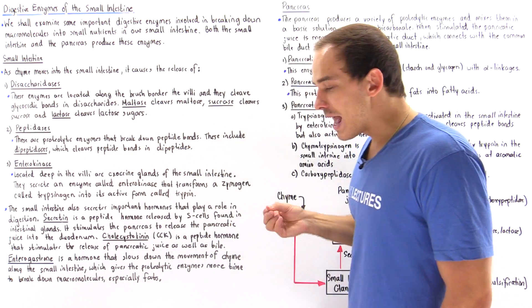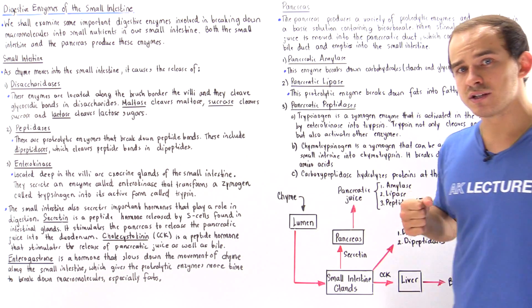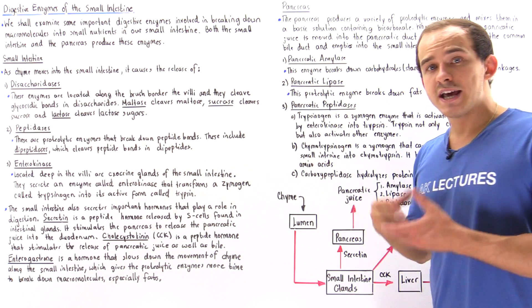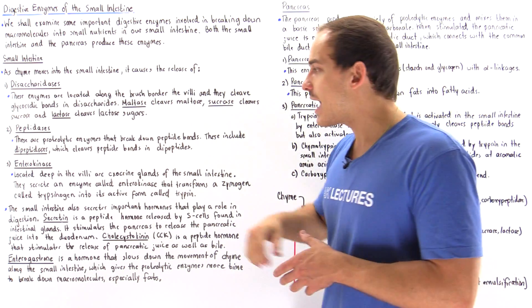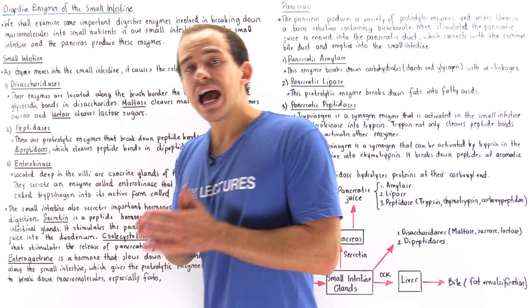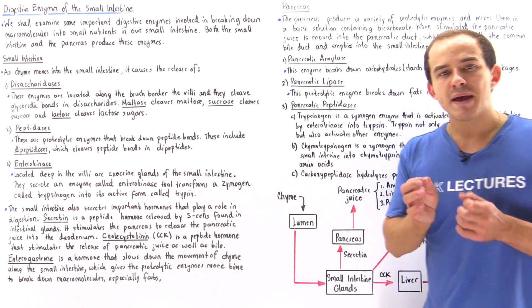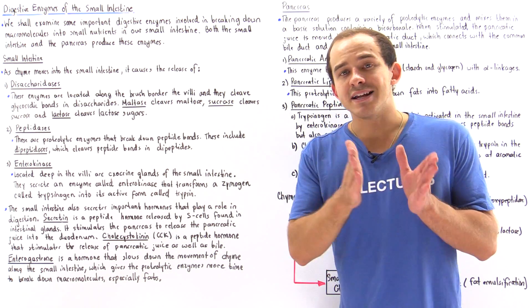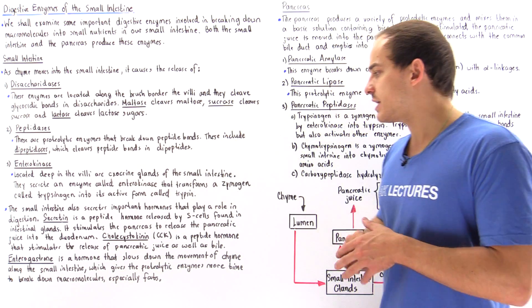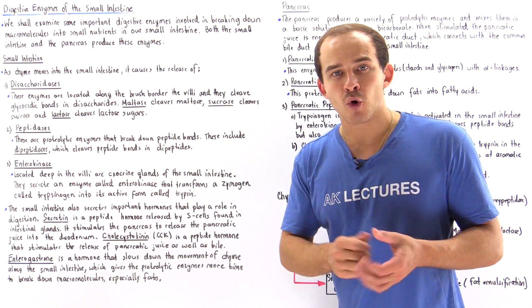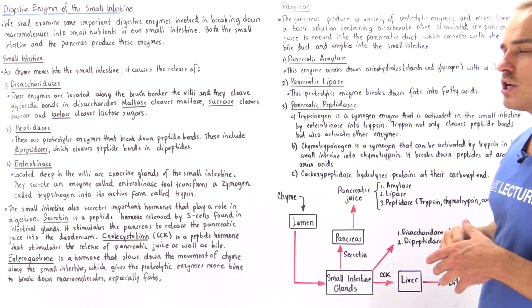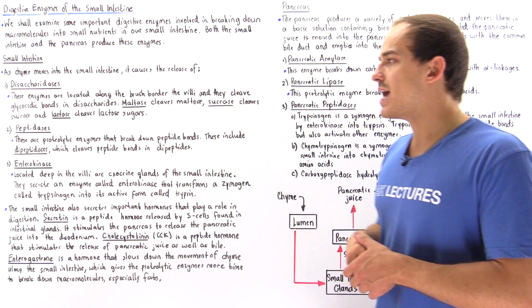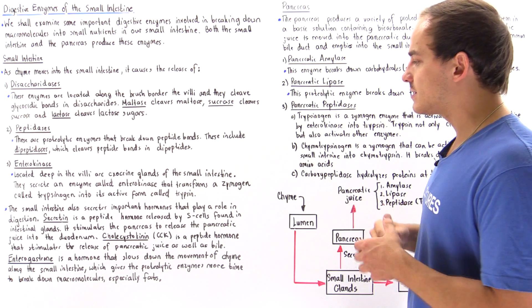Deep in our villi of the small intestine we have exocrine glands known as the crypts or glands of Lieberkühn. They secrete and produce a special proteolytic enzyme known as enterokinase. Enterokinase cleaves a specialized zymogen known as trypsinogen, activating it and transforming it into trypsin. Trypsin is a very important proteolytic enzyme that not only cleaves peptide bonds but also activates many other proteolytic enzymes in our digestive system.